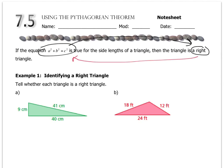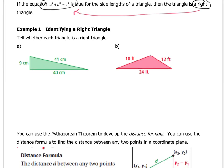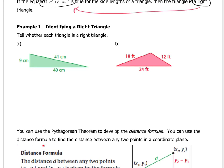What we're going to look at today is whether we can use the Pythagorean theorem to prove whether something is a right triangle. You can't just look at a triangle and say that's a right triangle. The only way you know is if it has the right angle box — it could be 89 degrees, 91 degrees, or 90.2 degrees. That's why pictures often say 'not drawn to scale' — they don't want you to assume the shape looks the way it does.